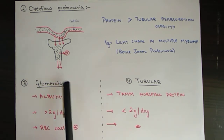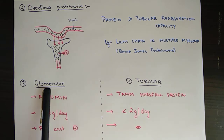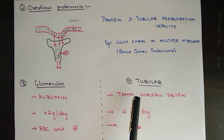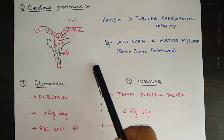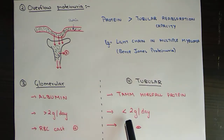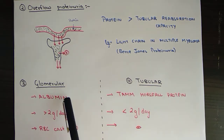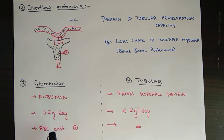In glomerular proteinuria, the main protein excreted is albumin, and the amount is more than 2 grams per day. It is also associated with RBC casts. In tubular proteinuria, the main protein is Tamm-Horsfall protein — a normal protein whose normal range is 70 to 75 milligrams per day — but in tubular proteinuria the amount increases to less than 2 grams per day. There are no RBC casts in tubular proteinuria.